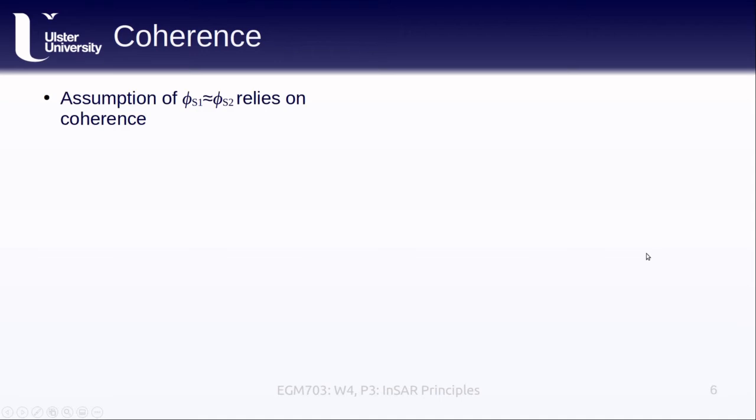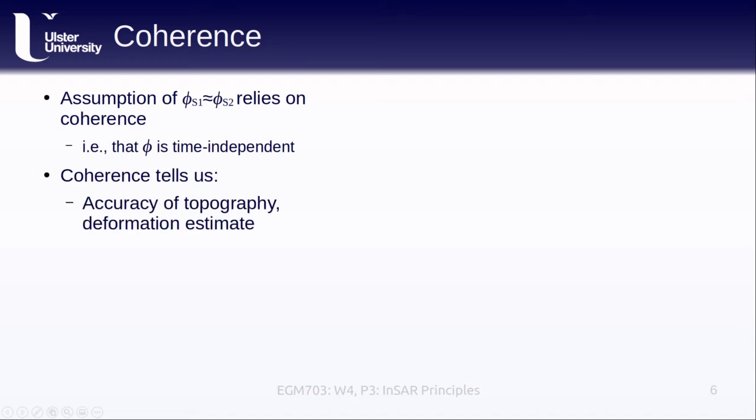As previously mentioned, the assumption that the random phase components are approximately equal and therefore zero out when we form the interferogram depends on whether we have coherence between the two images. And another way to think about this is that the phase is time independent. By measuring the coherence between two images, we can learn about the accuracy of our measured topography or the estimated deformation or displacement. If we have high coherence, it means that we can trust the estimated elevation or displacement from our interferogram. If we have low coherence, it tends to mean that our estimates are less reliable.